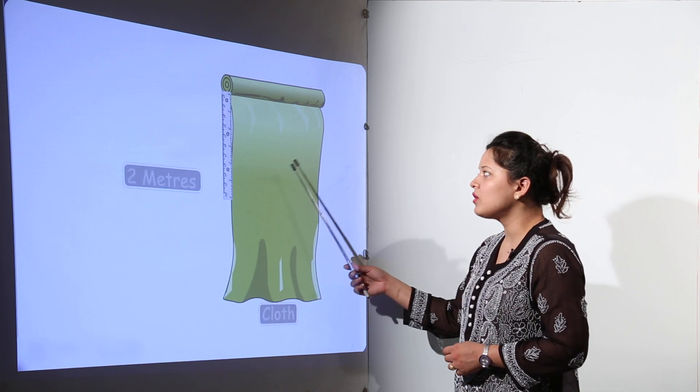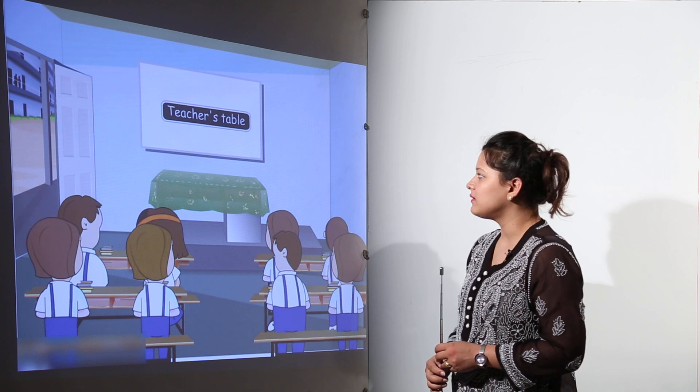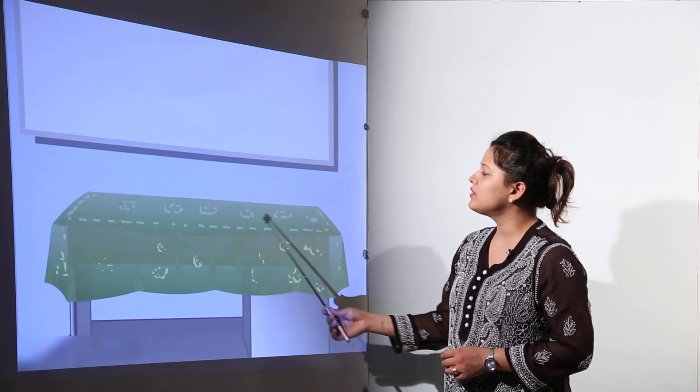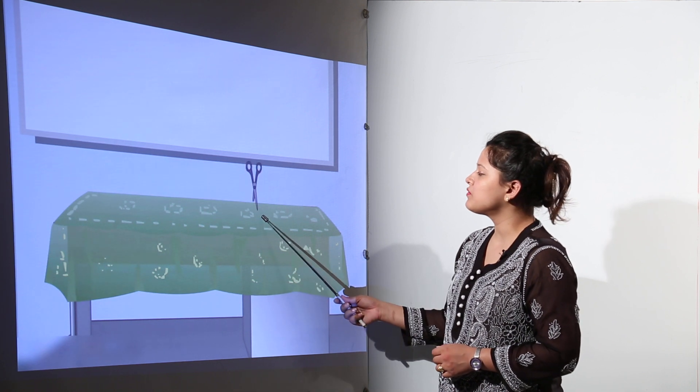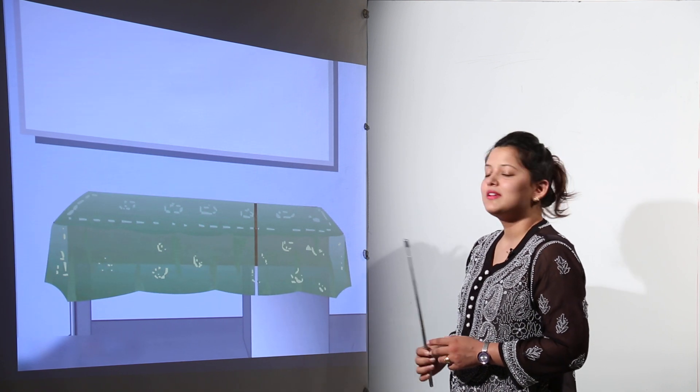So we can measure the 2 meters of cloth with the help of this scale. The teacher's table over here has a table cloth covering it. So we can measure the 2 meters of cloth and cut it from here, right?